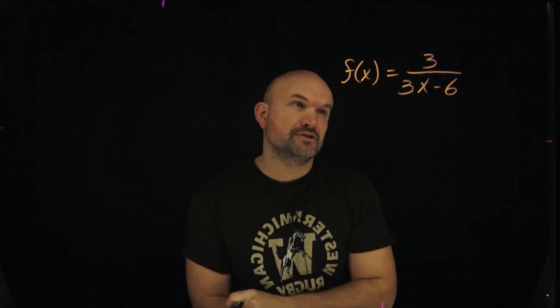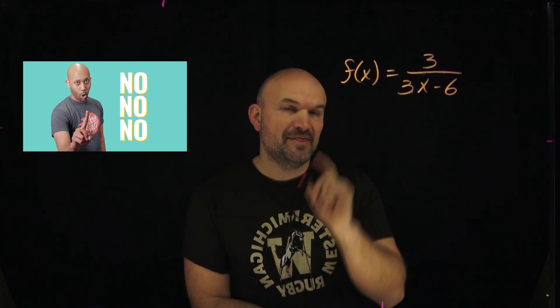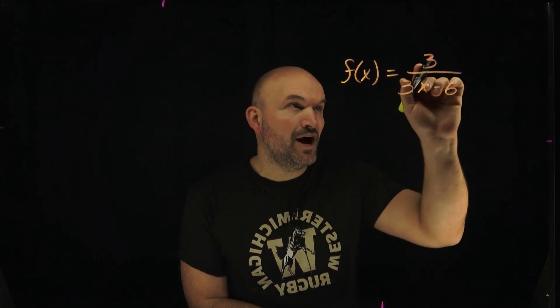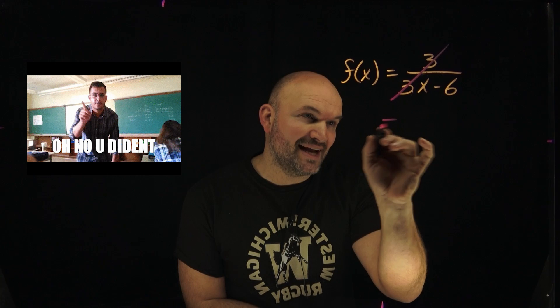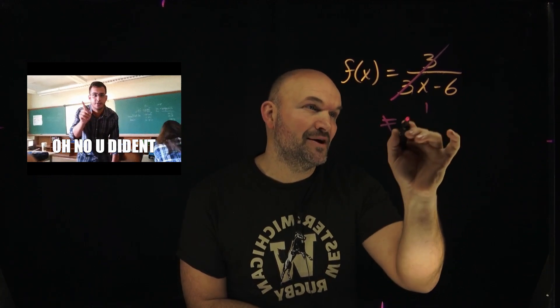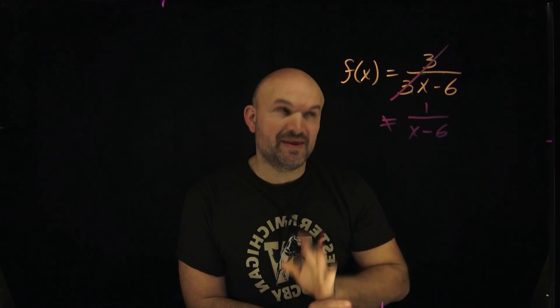When we want to find the vertical asymptotes of a rational expression, we don't want to make this mistake. The most common mistake that students will make is say, oh, a 3 in the numerator and denominator, let's just go ahead and divide it out. So that is not correct. The answer is not 1 over x minus 6. So don't do that.